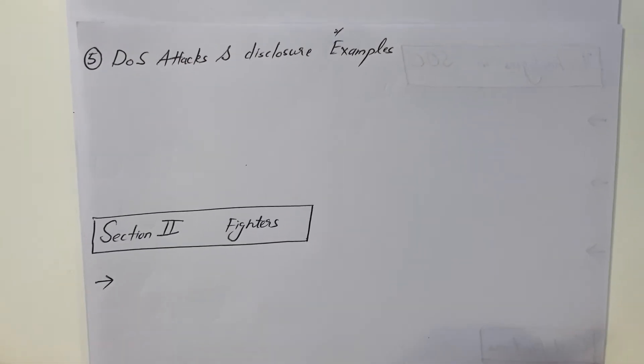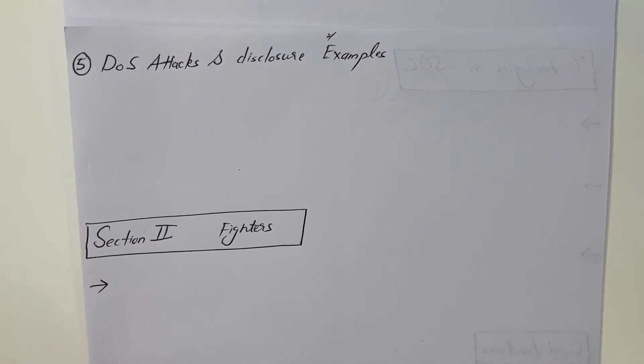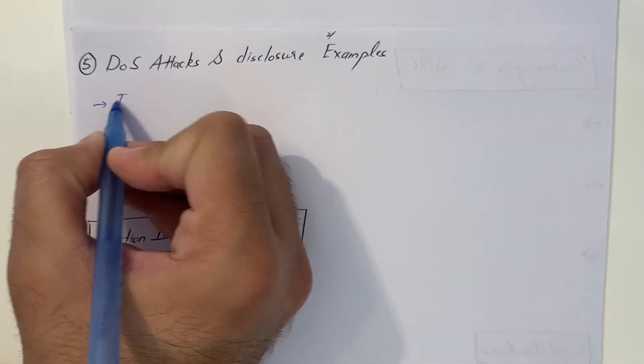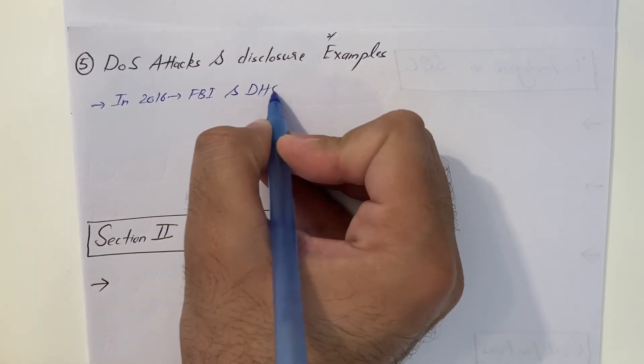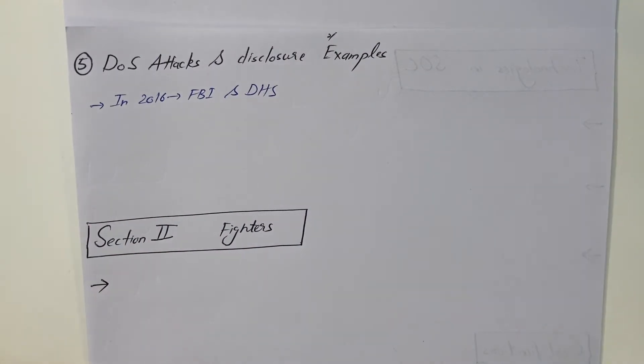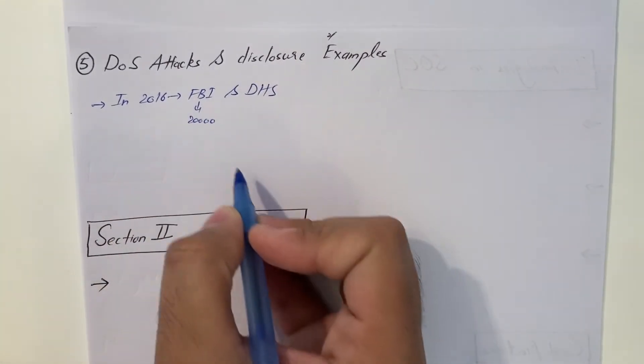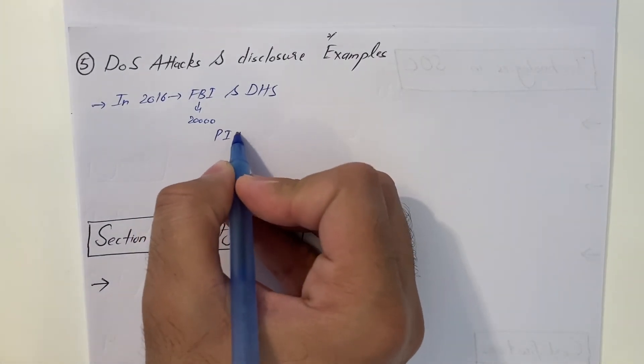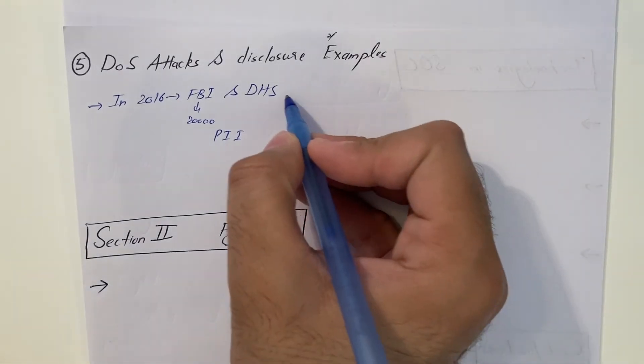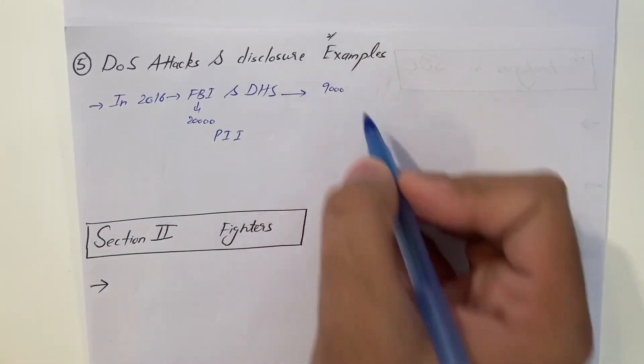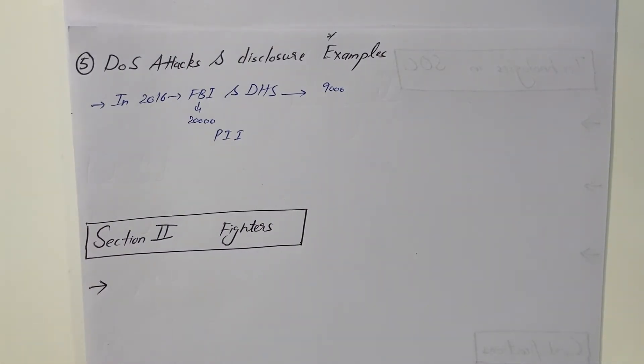Please remember one thing. Nobody can claim that I am 100% secure. I am safe. Nobody can claim that. Let me tell you, in 2016, even FBI and Department of Homeland Security, they were targeted by hackers. 20,000 employees of FBI, their personal identifiable information, PII, was disclosed. Department of Homeland Security, their 9,000 employees' personal identifiable information was disclosed.